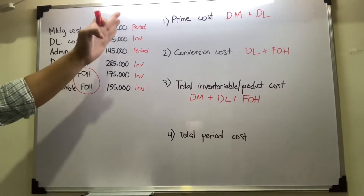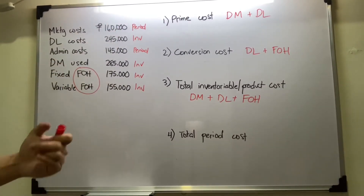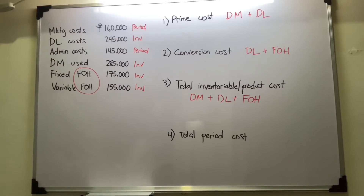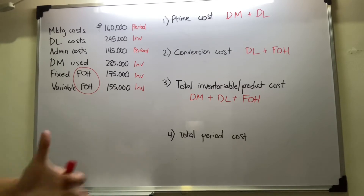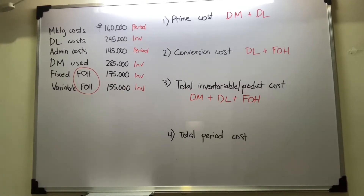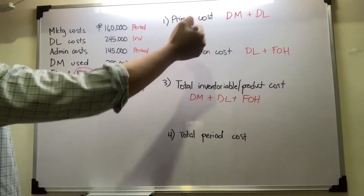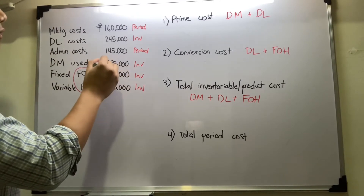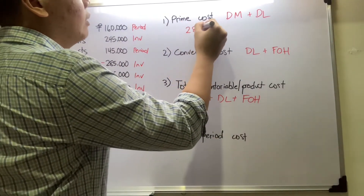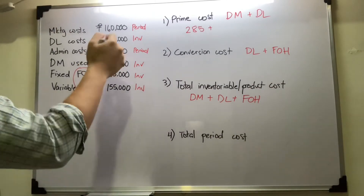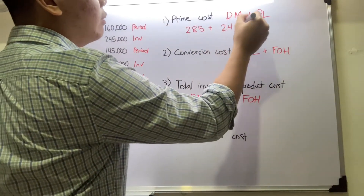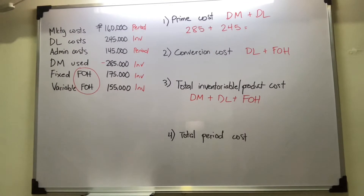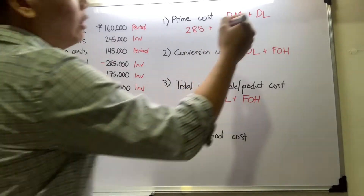Now that we've classified which items are inventoriable or period costs, we can compute the prime, conversion, inventoriable, and period costs. Prime cost equals direct materials plus direct labor: 285,000 plus 245,000, which equals 530,000 pesos.